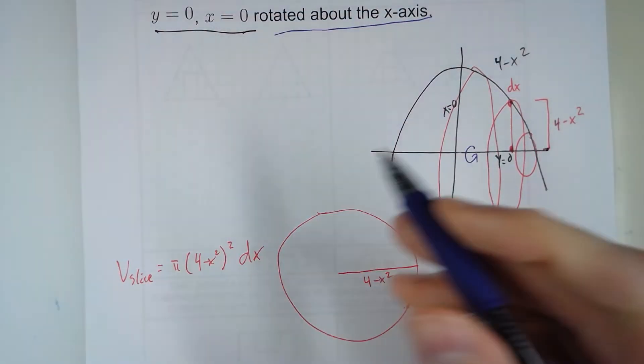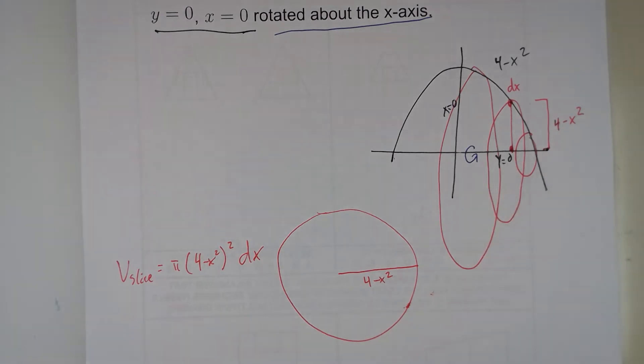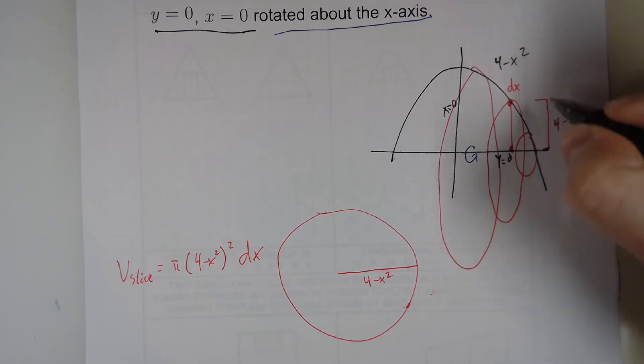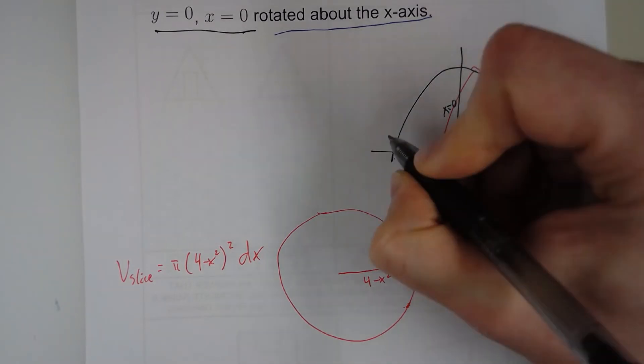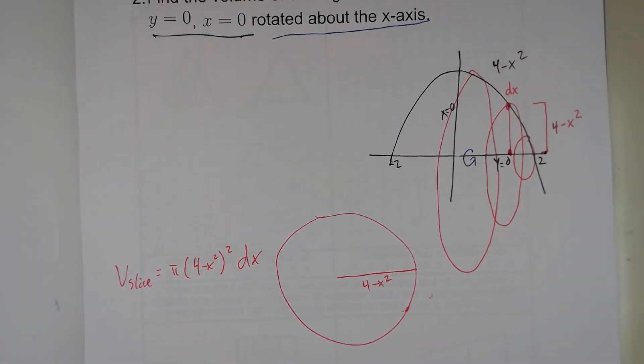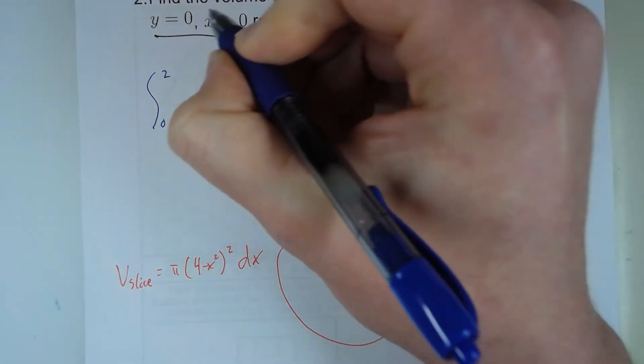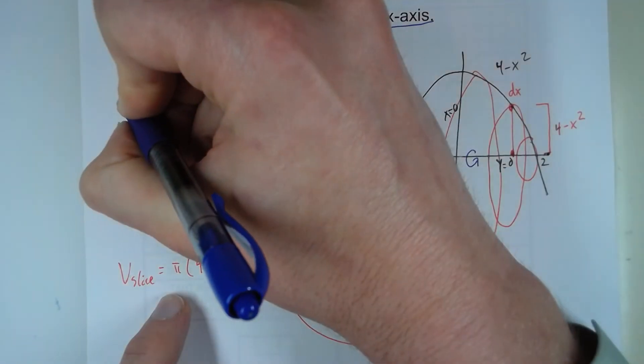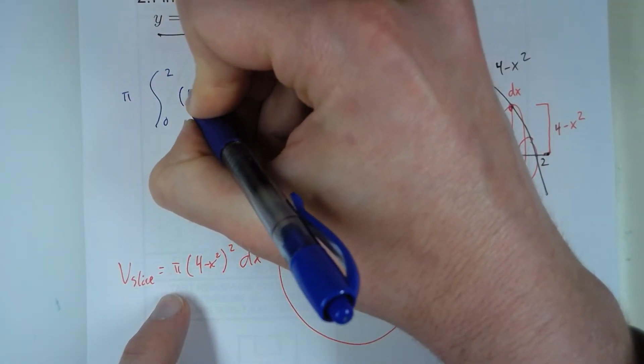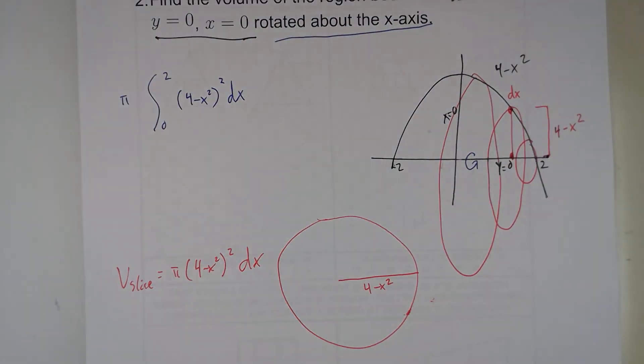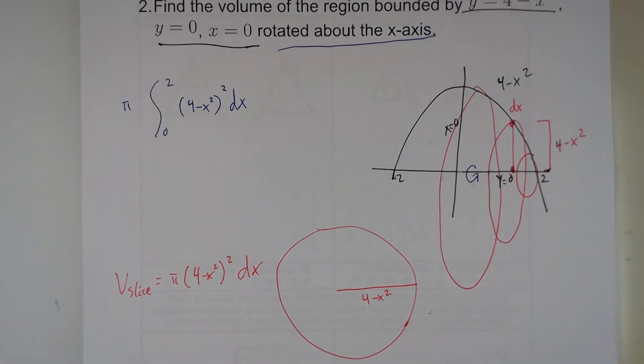And then, to find the total volume, we're going to add up all these slices from 0 out to, well, I didn't write that down, did I? Where is this going to hit the x-axis? Well, what value for x will work? It'll be negative 2 and positive 2. So this integral is going to go from 0 to 2. And so I'm going to go from 0 to 2 and adding up all these slices. So I'm going to put pi out front. And I have 4 minus x squared squared dx. And there's the integral.